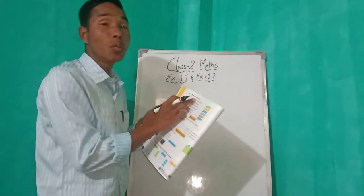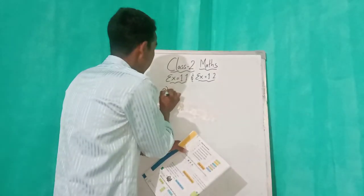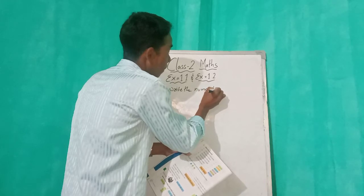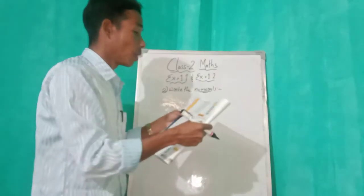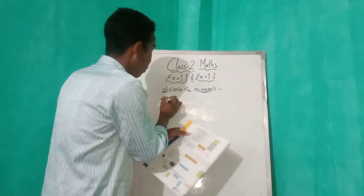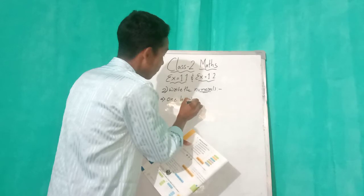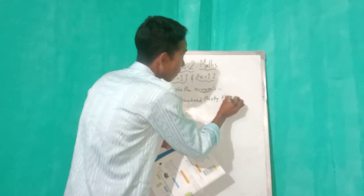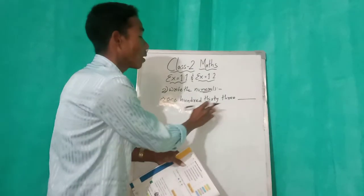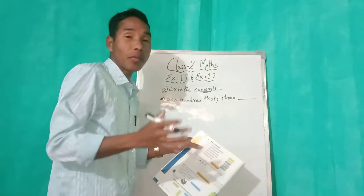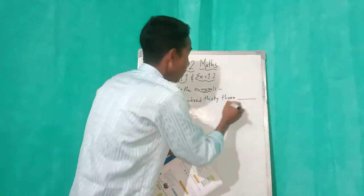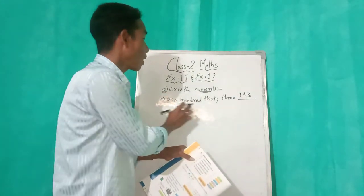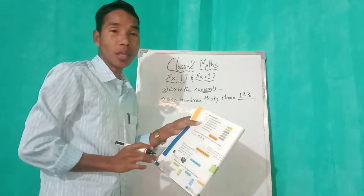See what is the question: write the numerals. Write the numeral means what? Numeral means number, we have to write the number. In number A, we have one hundred and thirty-three. The spelling in words is already given, so what we have to do? We have to write the numeral — 133. Have you got it?